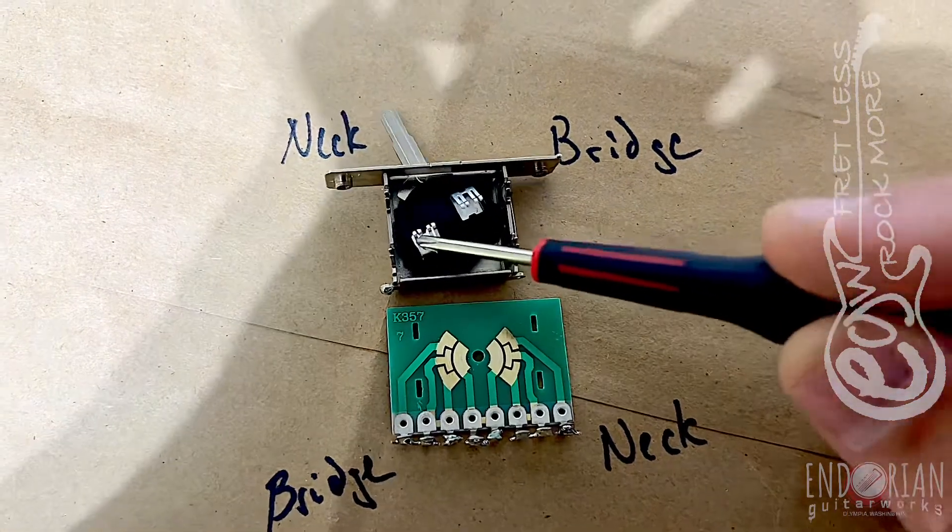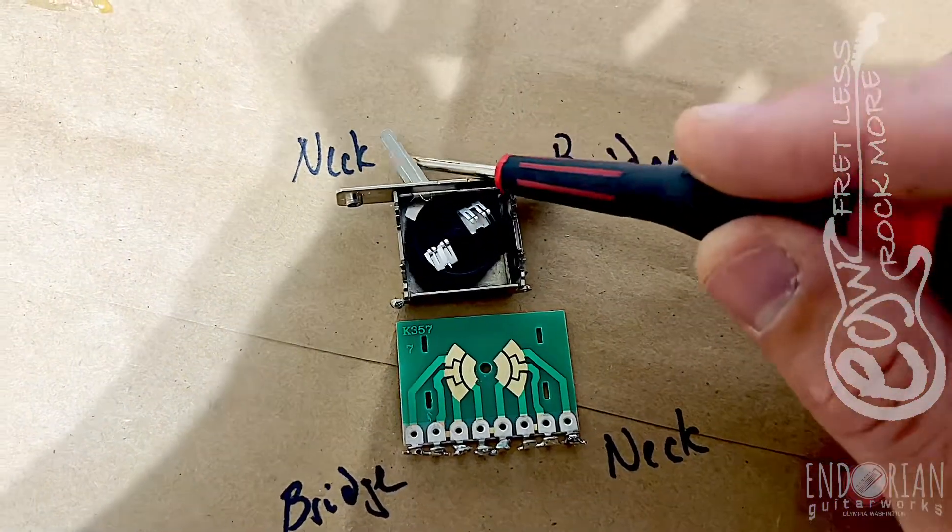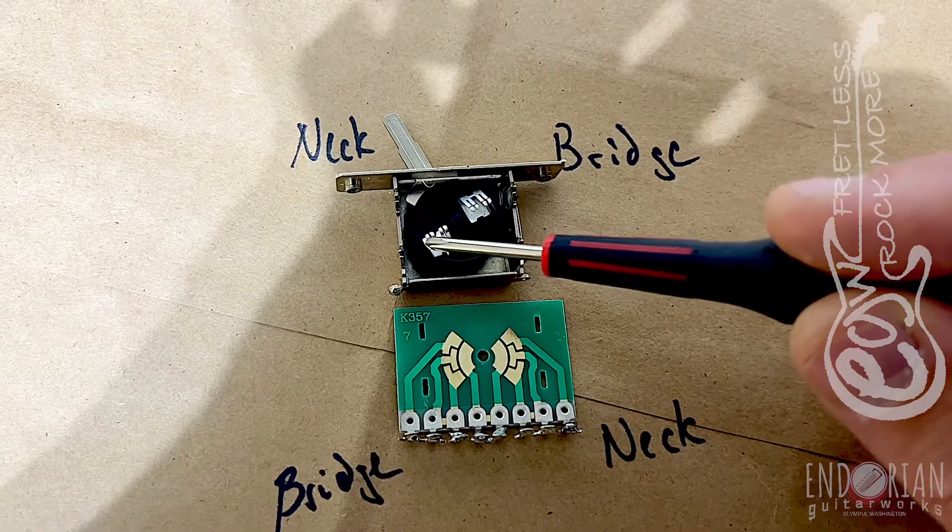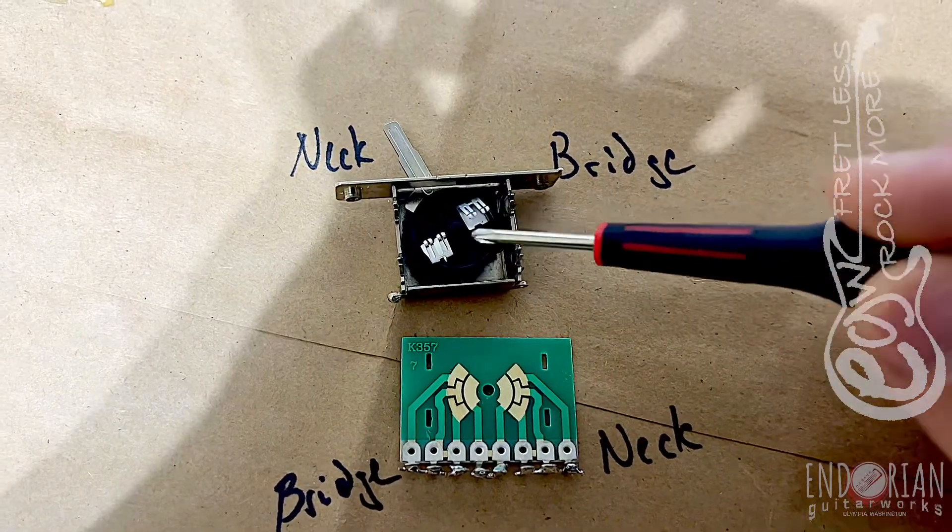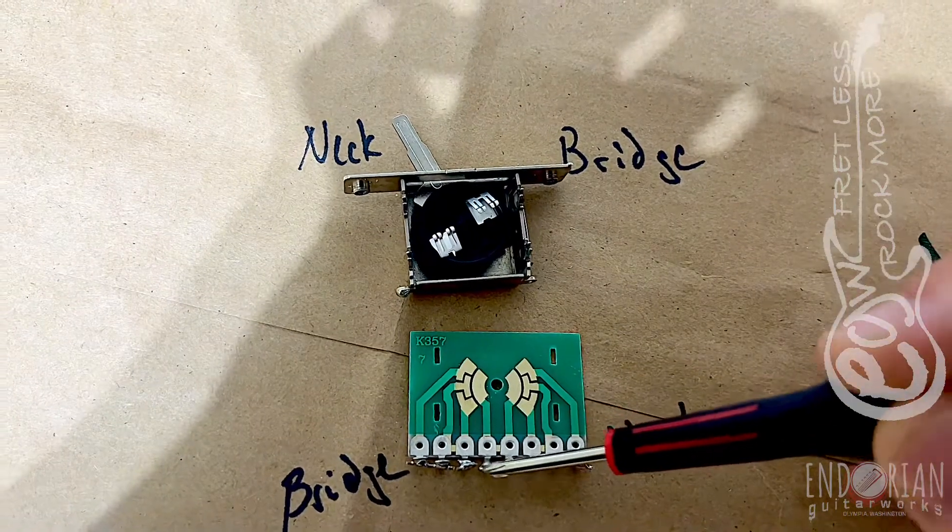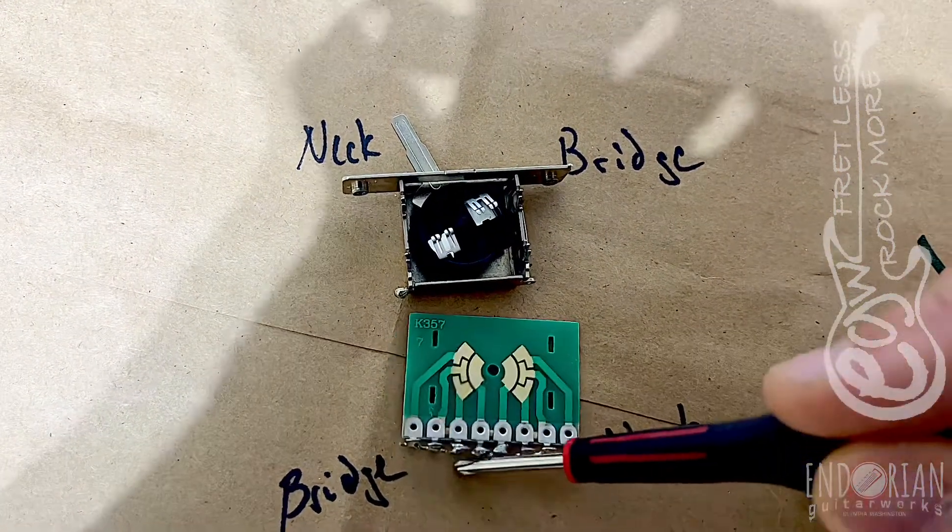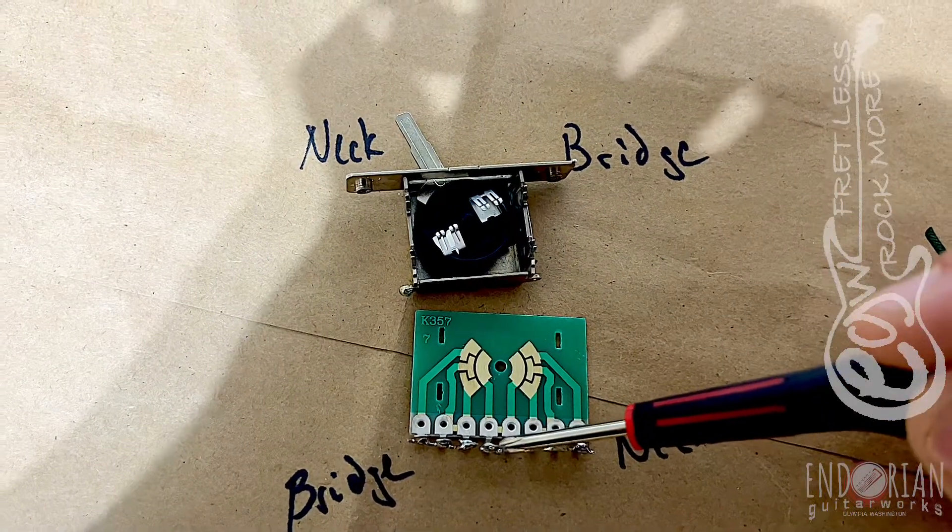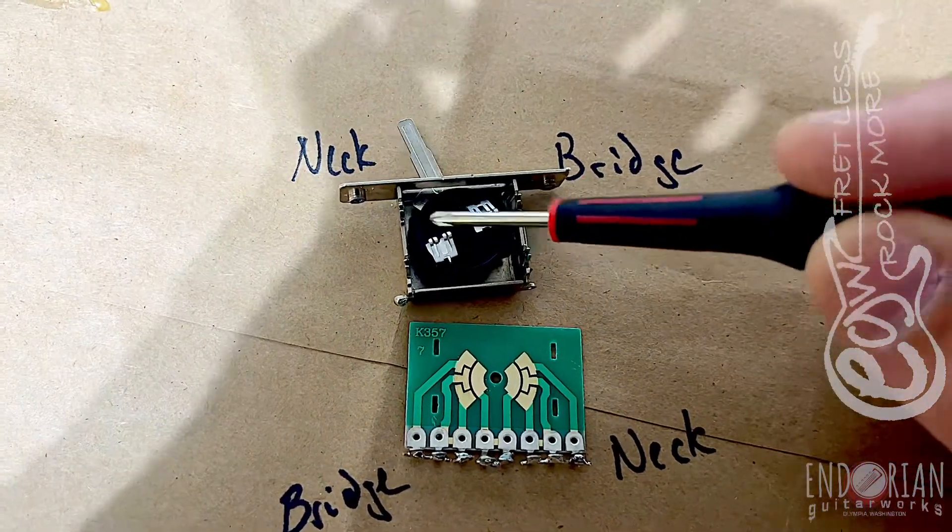The way this works is these contacts rotate and act as jumpers. The center contact will always jump across to this side. Here's your output and here's your output on the other side. So it's natural that you're going to want to tie these together if you're using this switch in this fashion. These center lugs get wired together.